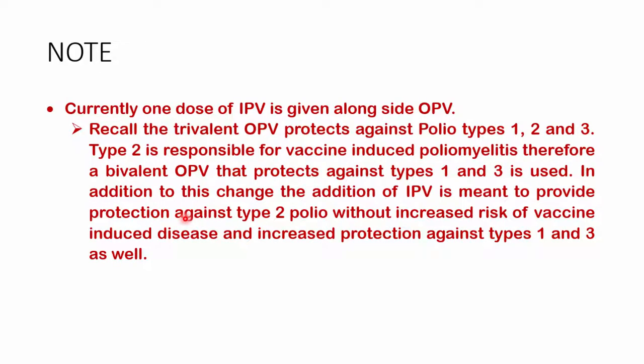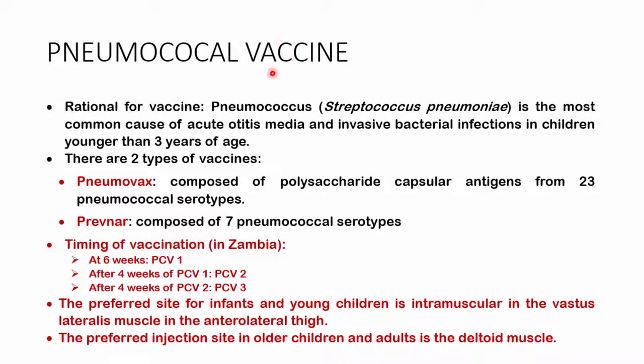The reason we introduced IPV: OPV protected against all three types of polio — type 1, type 2, and type 3. We realized that type 2 was responsible for vaccine-associated disease, so we removed it from the OPV, making it a bivalent vaccine covering only type 1 and type 3. To maintain full efficacy, we introduced an inactivated polio vaccine that protects against type 2, thereby increasing immunity to all three types and reducing vaccine-associated disease.